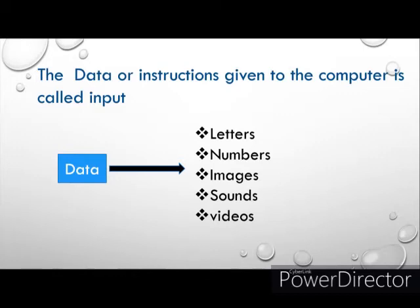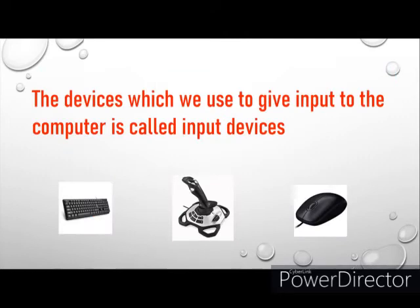Then what is data? We can give numbers — we can type using the keyboard. Sometimes we scan and give images, sounds, or videos. These are called data. The things that we give to the computer are called data or input. For giving data or input to the computer, we need some devices called input devices. The devices which we use to give input to the computer are called input devices.